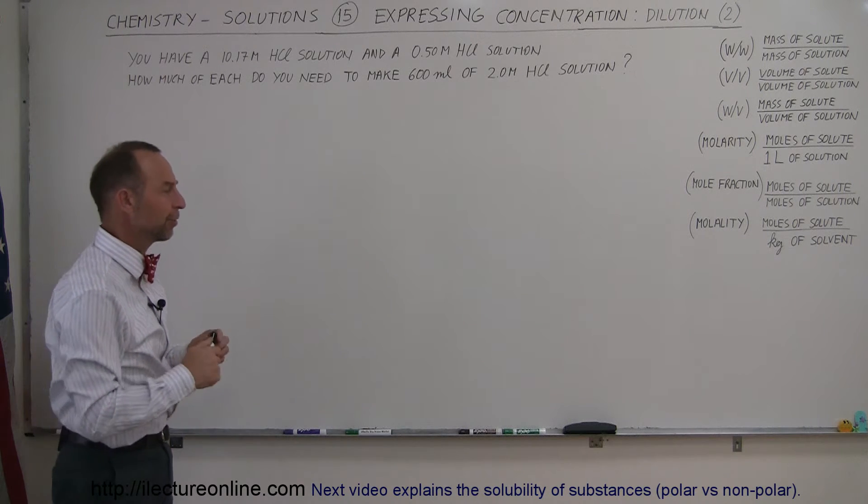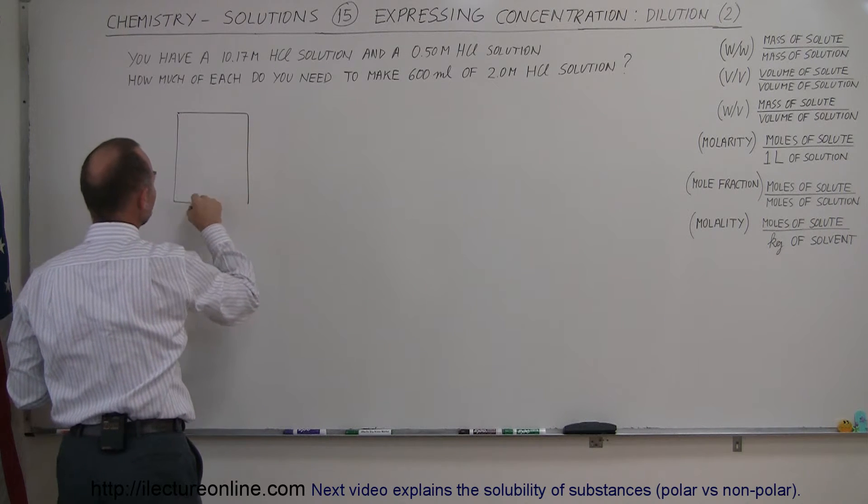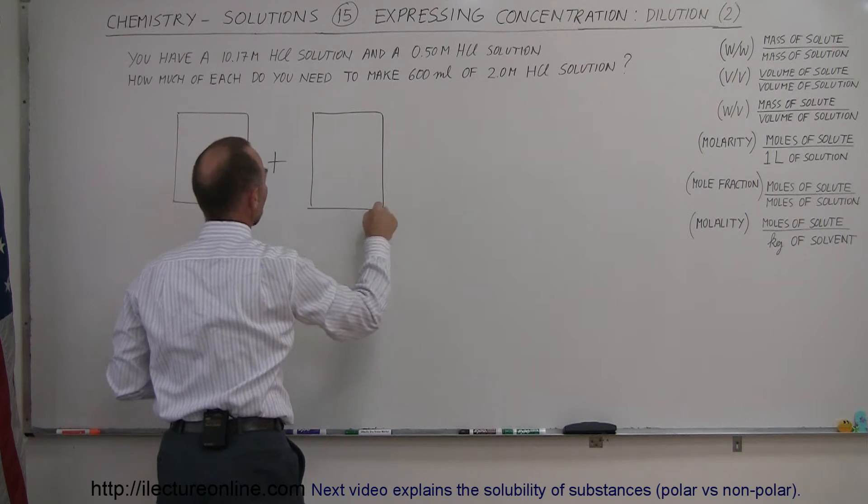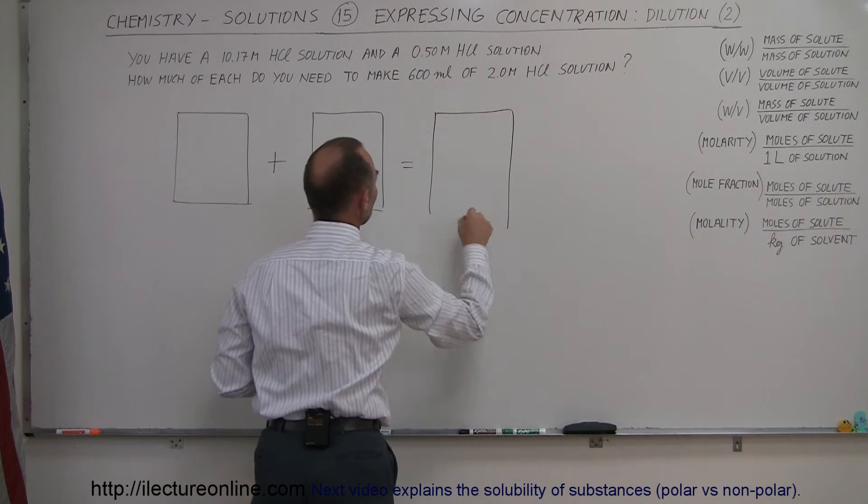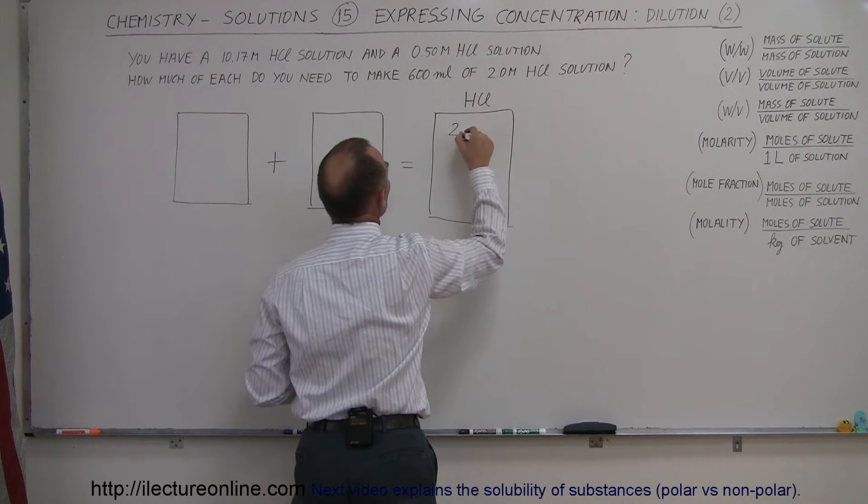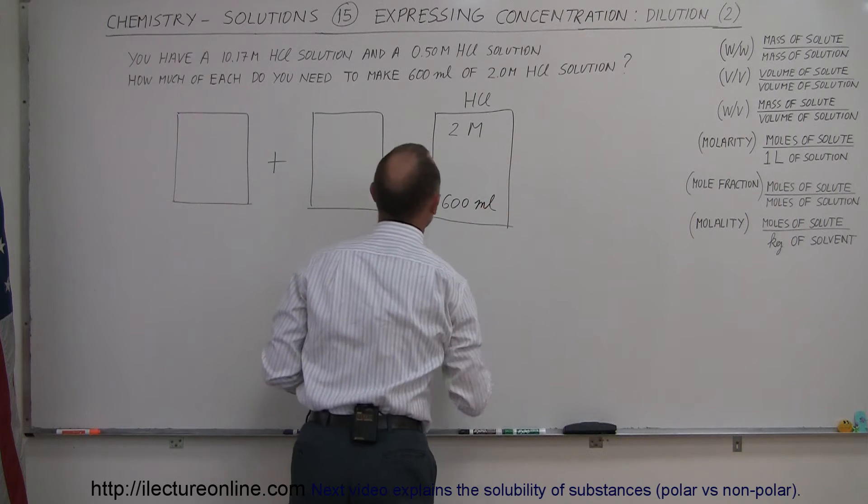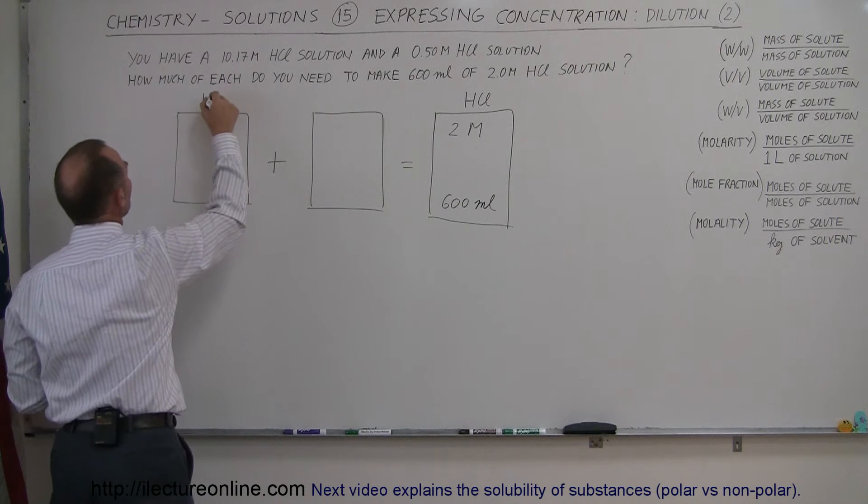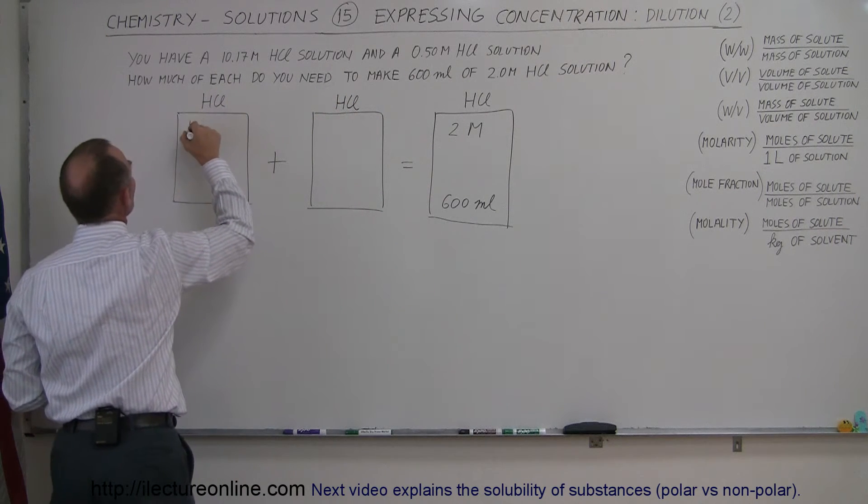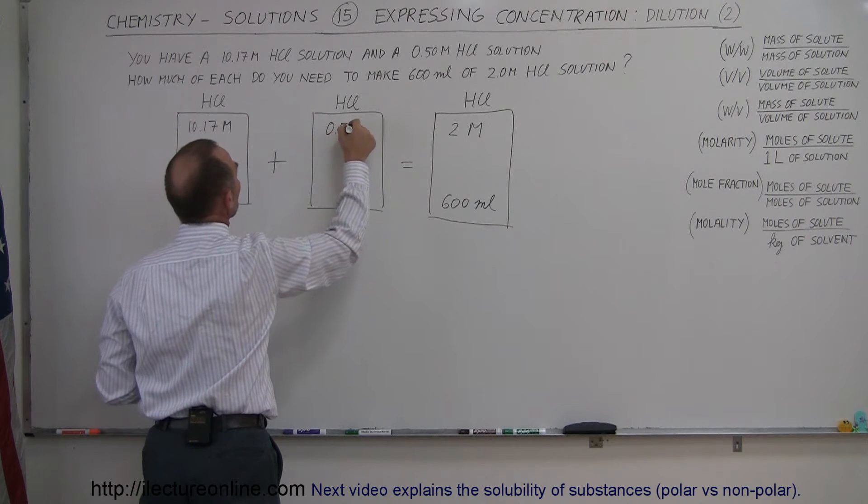We're going to approach it the same as we did in the previous video. So we have two solutions that we're going to mix together and that will allow us to end up with the solution that we want. At the end we want a hydrochloric acid solution, a two molar solution, and we want 600 milliliters of it. So the two solutions we're going to use are both hydrochloric acid solutions. One of them is a 10.17 molar solution and the other one is a 0.50 molar solution.